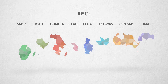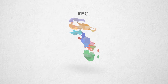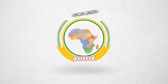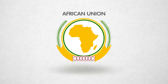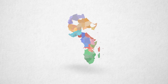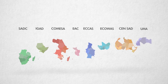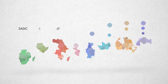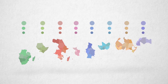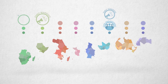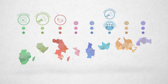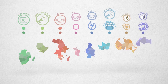Known as RECs, they are the building blocks of the AU, but there are a number of challenges. The biggest challenge is that the AU works with eight RECs, but these have all developed differently. Some are more advanced in promoting responses to peace and security, while others have limited capacities or different focus areas.